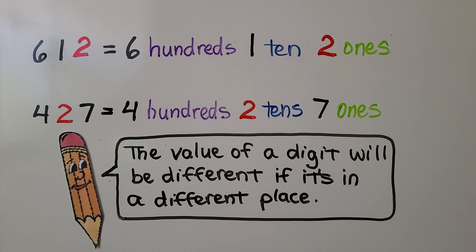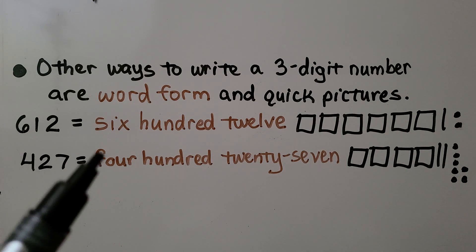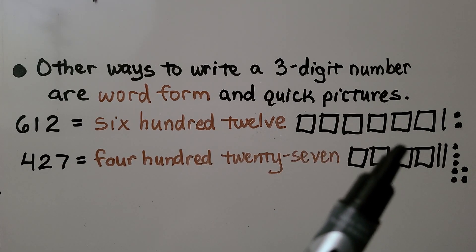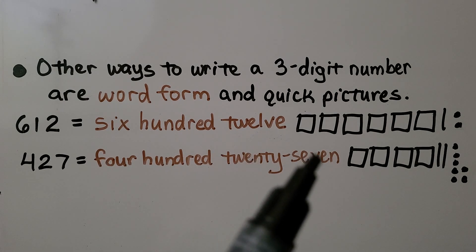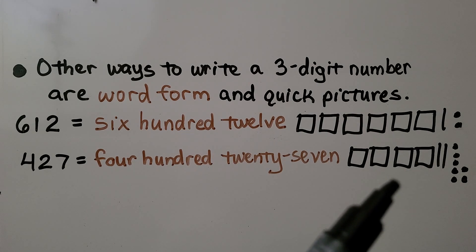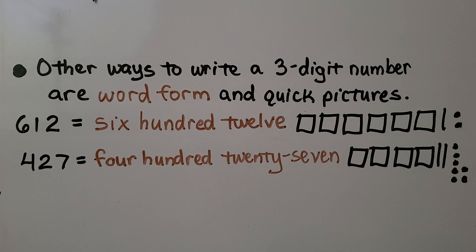Other ways to write a three-digit number are word form and quick pictures. Six hundred twelve is 'six hundred twelve' in word form. In quick pictures we make six squares for six hundred, one line for one ten, and two dots for two ones. Four hundred twenty-seven is 'four hundred twenty-seven' in word form. In quick pictures we make four squares for four hundred, two lines for two tens, and seven dots for seven ones.